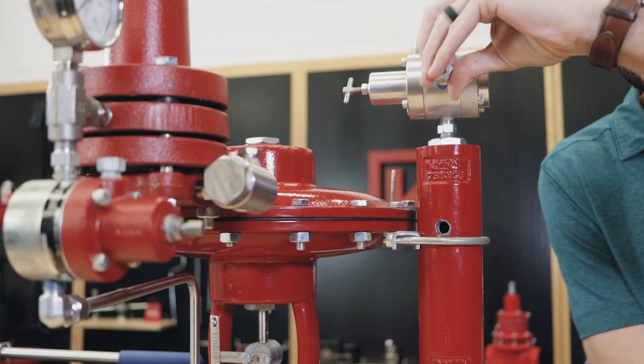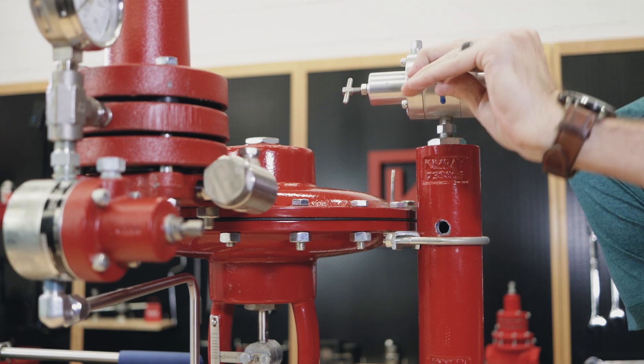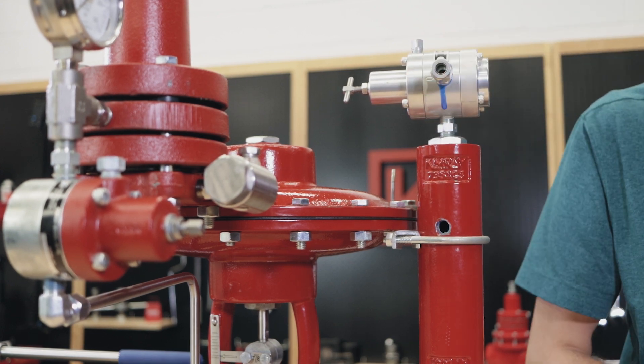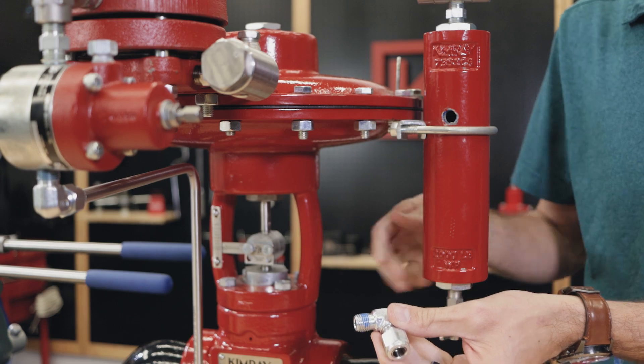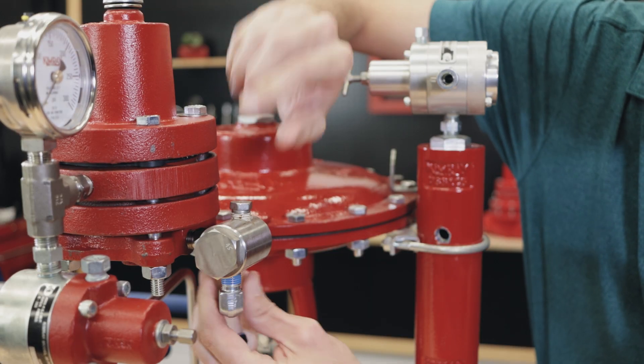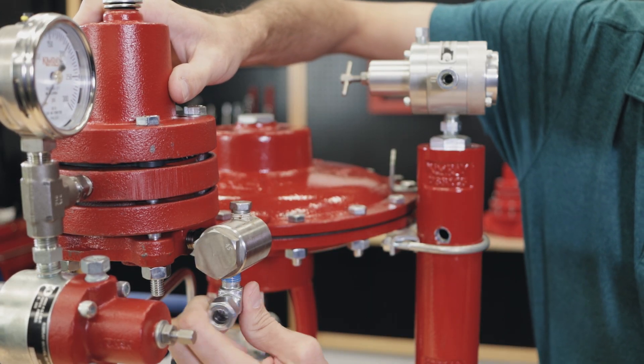For our second connection, we'll be using a straight connector and one elbow. First, apply sealant to the connection, fully tighten the straight connection, then start the elbow connector, leaving a half turn to make the installation easier.